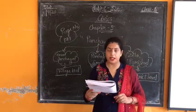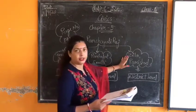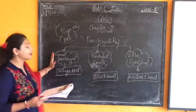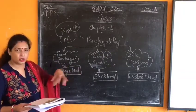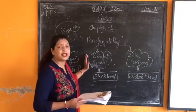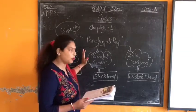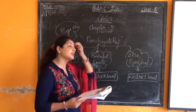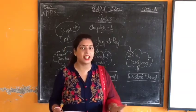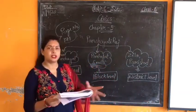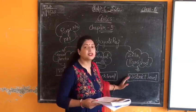In Panchayati Raj's system there are three levels. The first level is the Gram Panchayat, which is the village level. The next part is the Panchayat Samiti, which is above the Gram Panchayat at the block level. The third level is the Zila Parishad, which is at the district level. Our district is Ghaziabad, which is the main district level.